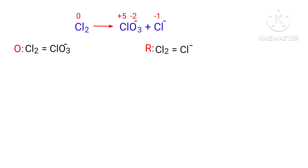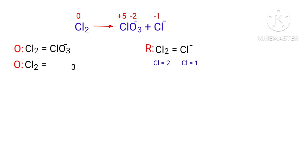Now you can balance the number of atoms in the two half-reactions. In the oxidation half-reaction, to balance the Chlorine atoms we need to put a coefficient of 2 in front of ClO₃⁻. The Chlorine atoms are now balanced.